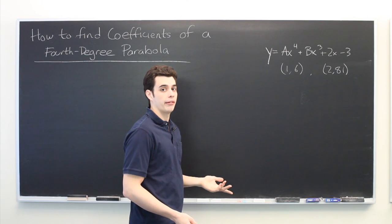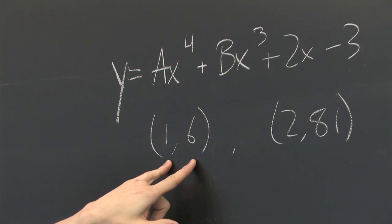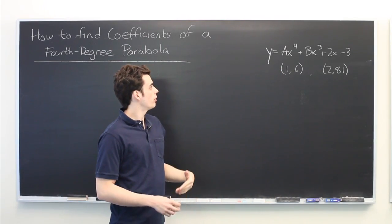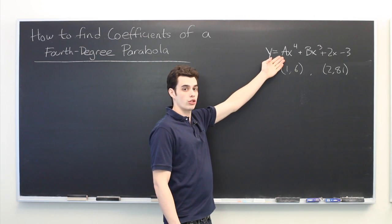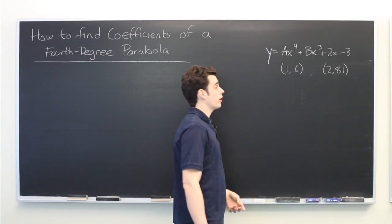The other piece of information that we have is that the graph of this will pass through the points (1,6) and (2,81). So in order to determine these coefficients, what we can do is simply take these pieces of information and plug it in and see what we get.